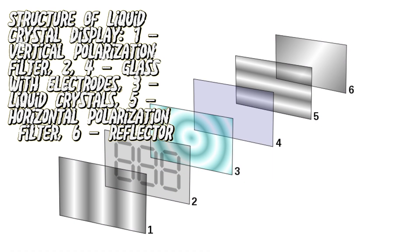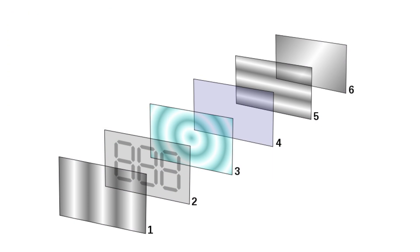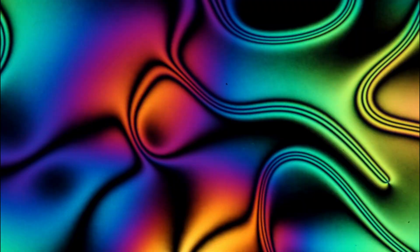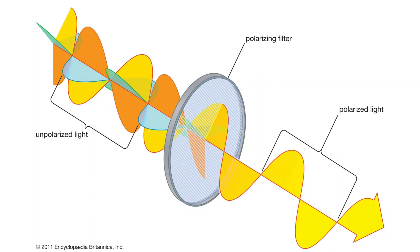In this state, the molecules flow as in a liquid, but they all point in the same direction and cannot rotate freely, like a crystalline solid. But unlike a liquid, liquid crystals react to polarized light.